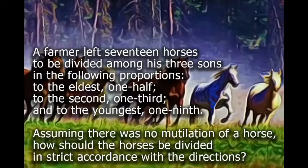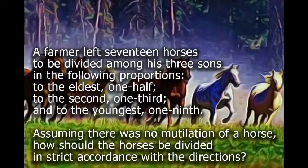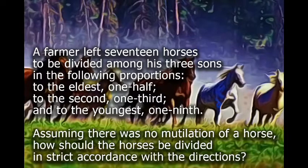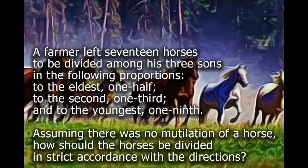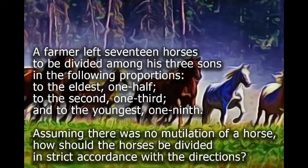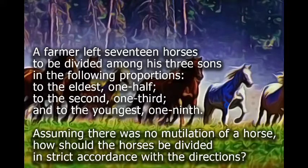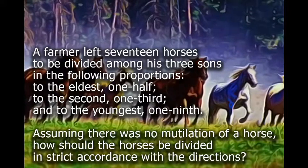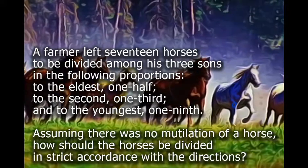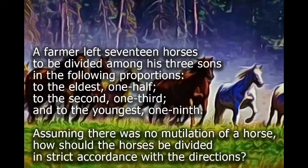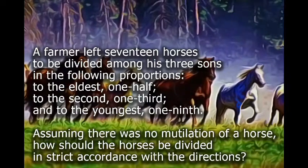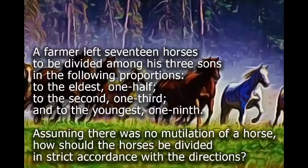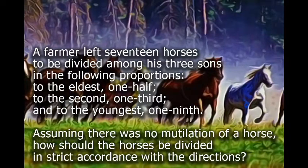A farmer left 17 horses to be divided among his three sons in the following proportions: to the eldest, one half; to the second, one third; and to the youngest, one ninth. Assuming there was no mutilation of a horse, how should the horses be divided in strict accordance with the directions?